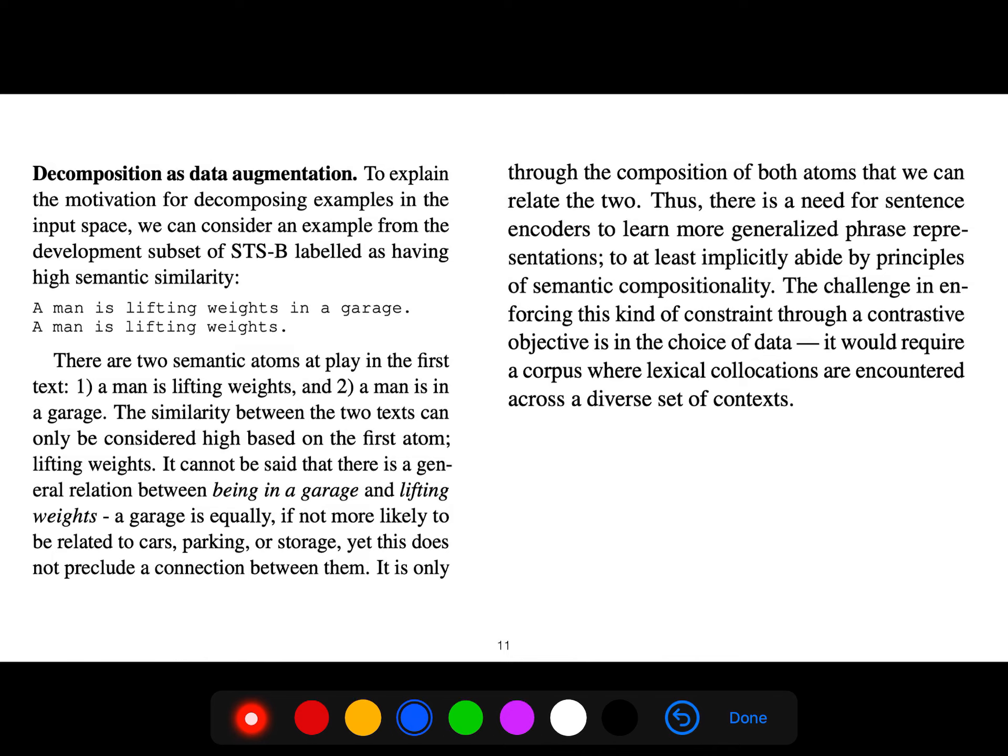A garage is equally, if not more likely, to be related to cars, parking, or storage, yet this does not preclude a connection between them. It is only through composition of both atoms that we can relate the two. Thus, there is a need for sentence encoders to learn more generalized phrase representations, to at least implicitly abide by principles of semantic compositionality.